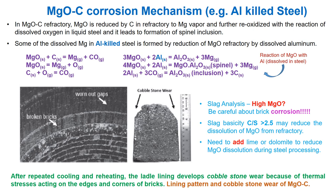Understanding the corrosion behavior analysis of the most consumable magnesia-carbon refractory has always been interesting. From this perspective, the magnesia-carbon corrosion mechanism during the processing of aluminium-killed steel has been discussed.